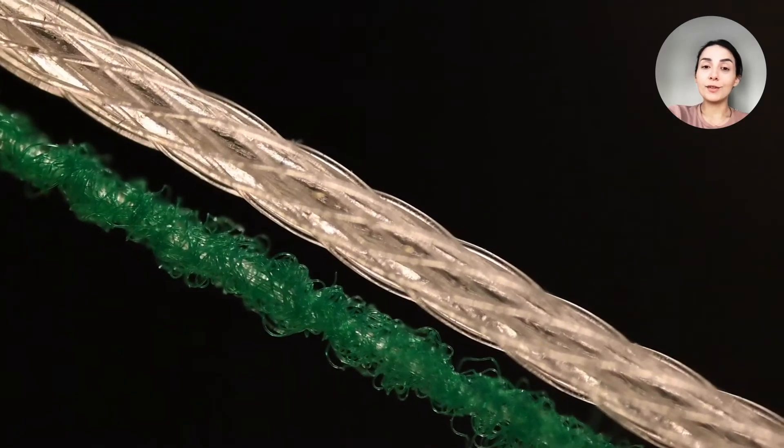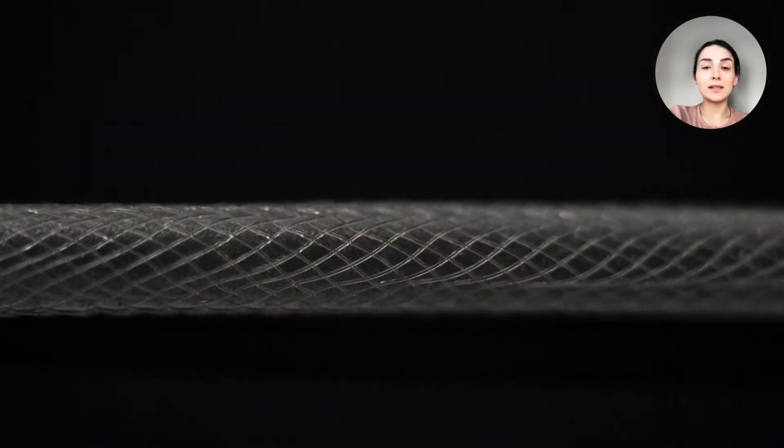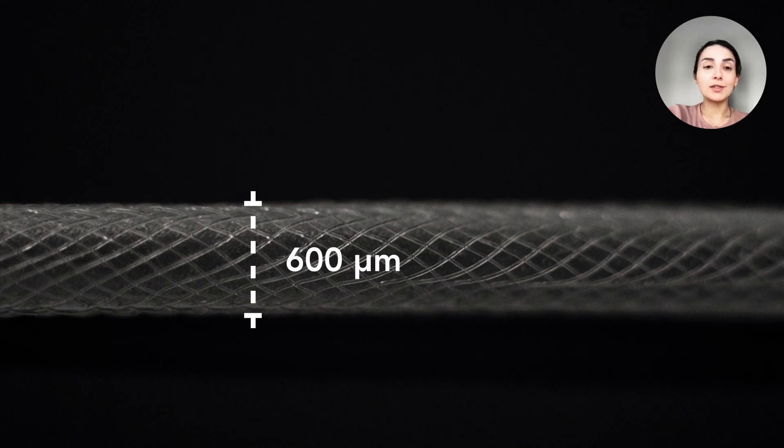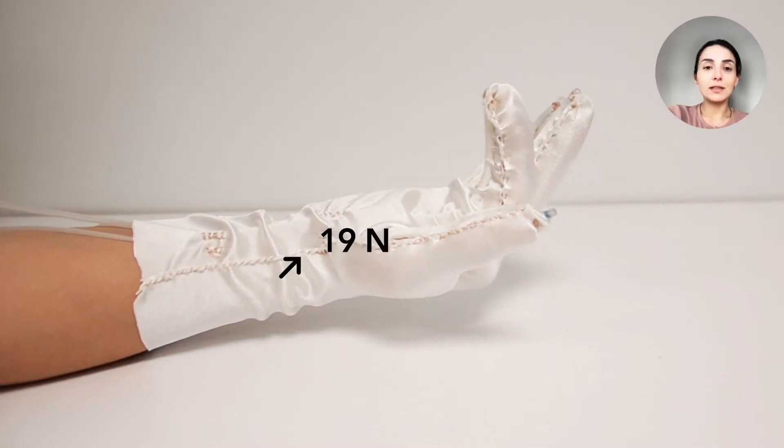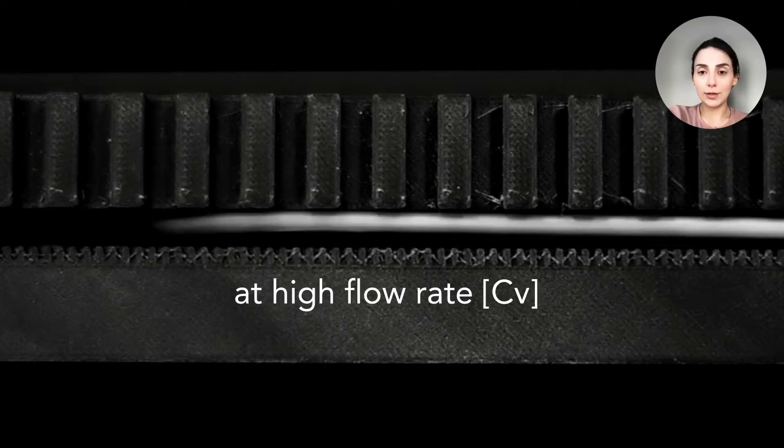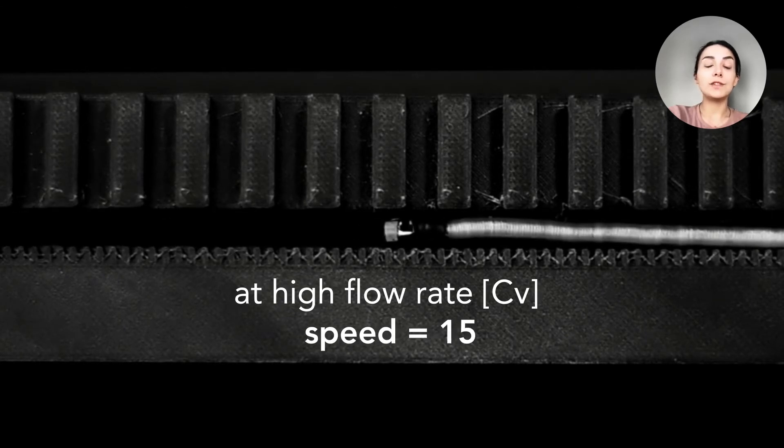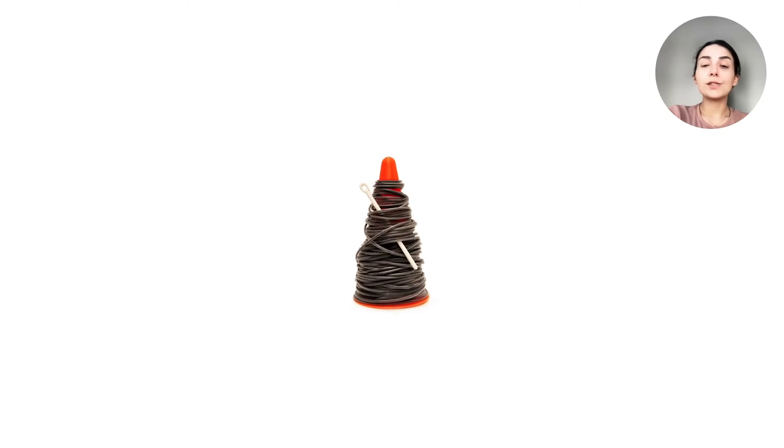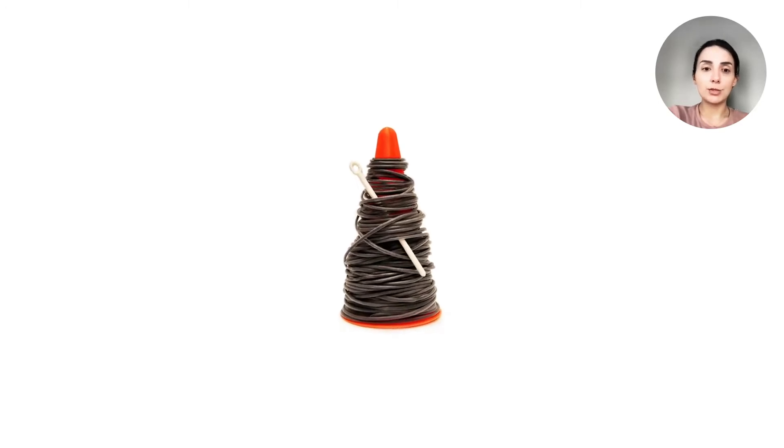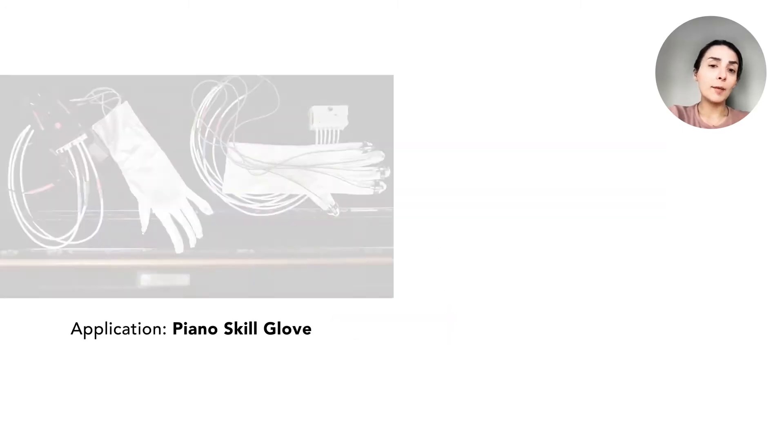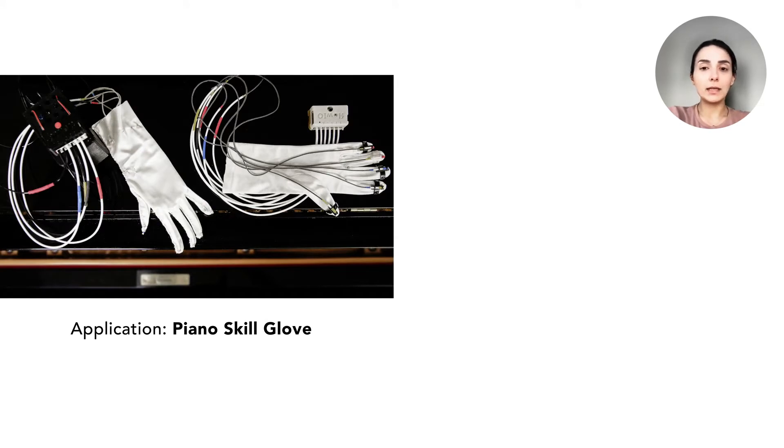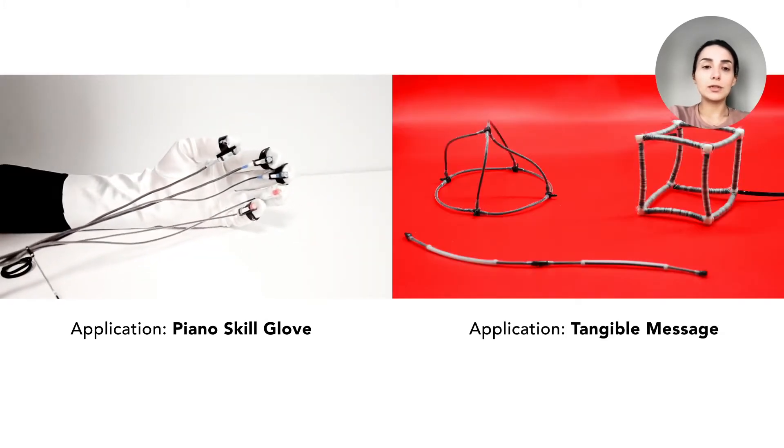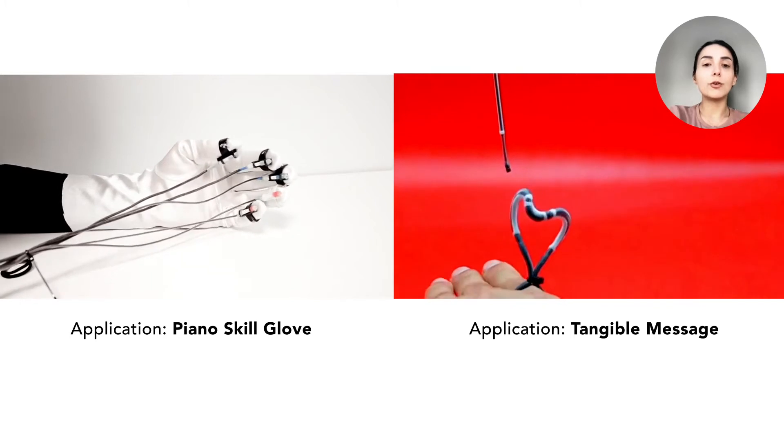A single OmniFiber device can be as thin as 600 microns, exhibit forces up to 90 Newtons, and demonstrate high speeds of linear actuation peaking at 150 millimeters per second. These allow designers to seamlessly weave them into everyday tangible interactions such as haptics-mediated skills training or actuated tangibles for remote interpersonal communication.